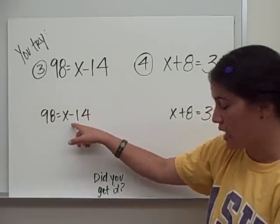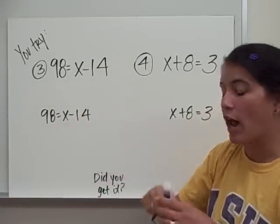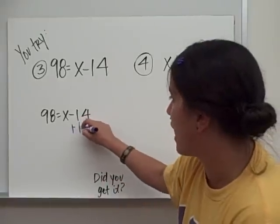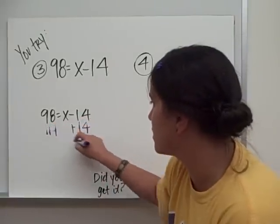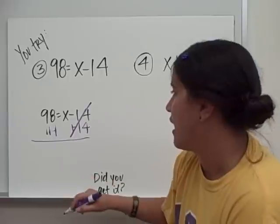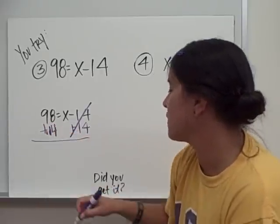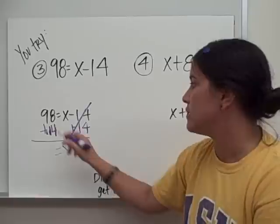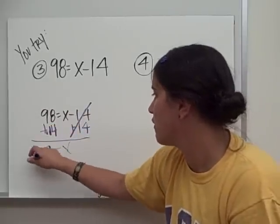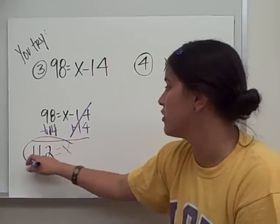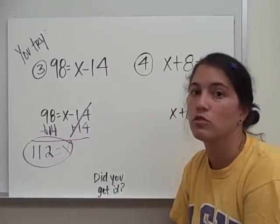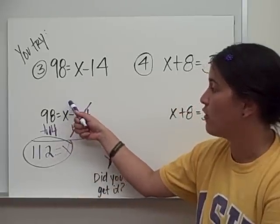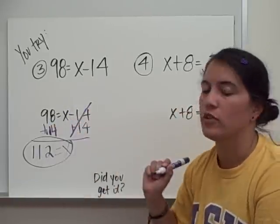Example 3: 98 equals x minus 14. This is a subtraction equation, so in order to undo subtraction I'm going to use addition. I add 14 to both sides. 98 plus 14 is 112, so x equals 112. Remember to go back and check — 112 minus 14 gives you 98.